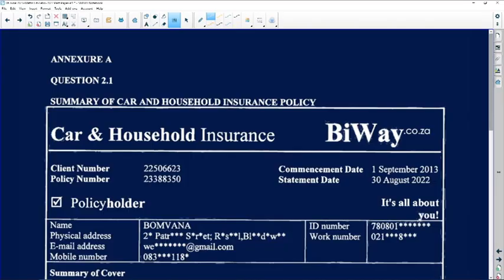Question 2 of the November 2022 Mathematical Literacy Paper 1 is out of 34 marks. We are tackling finance and data handling and a bit of probability. We are given an annexure, a summary of a car and household insurance policy called BiWay.